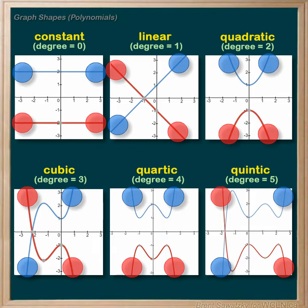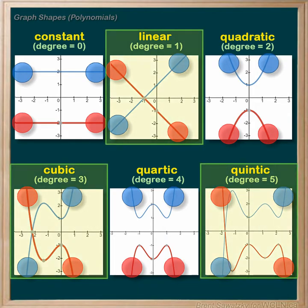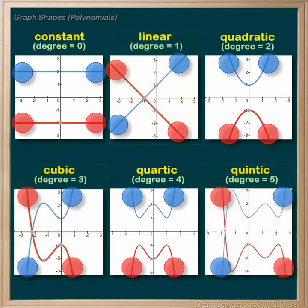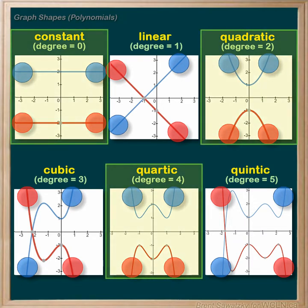Trend number one: the relationships with odd degrees — that is 1, 3, 5 — they all start in the bottom left and end in the top right. With the negatives of those odd degrees all starting in the top left and ending in the bottom right. The relationships with even degrees — that is 0, 2, 4, 6 — they all start in the top left and end in the top right. With their negatives all starting in the bottom left and ending in the bottom right.